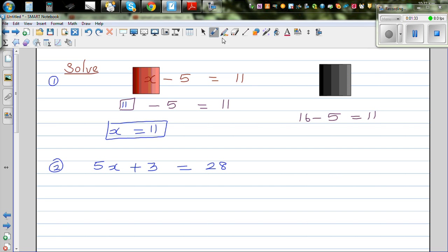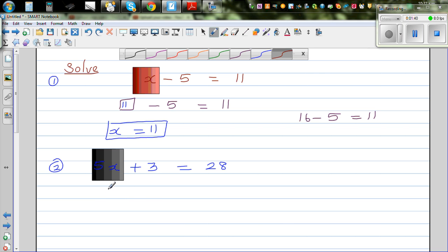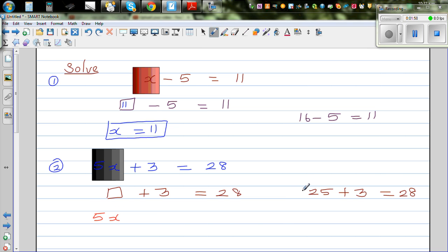Okay, so first the same strategy. Cover this up. And here you are asking the question what plus 3 gives you 28. So well, you should know 25 plus 3 is 28. So this 5x can be written as, this 5x becomes, so you can say this is 25 plus 3 is 28. So 5x equals 25.